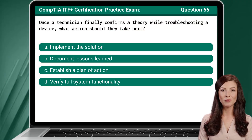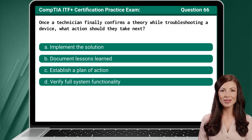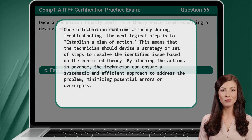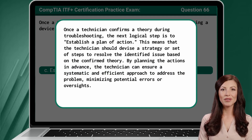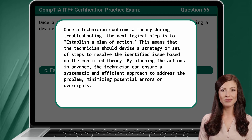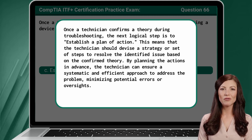Question 66. Once a technician finally confirms a theory while troubleshooting a device, what action should they take next? The answer is C: Establish a plan of action. Once a technician confirms a theory during troubleshooting, the next logical step is to establish a plan of action — devising a strategy to resolve the identified issue, ensuring a systematic and efficient approach while minimizing potential errors or oversights.